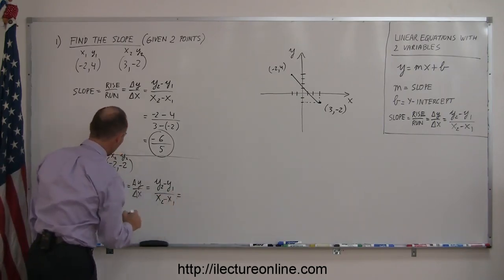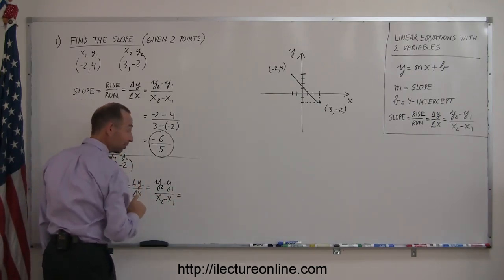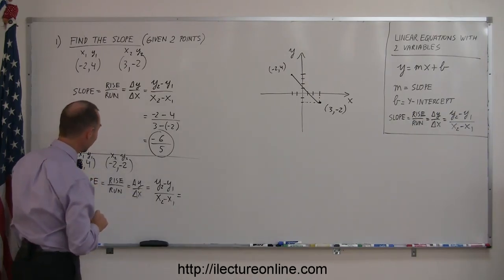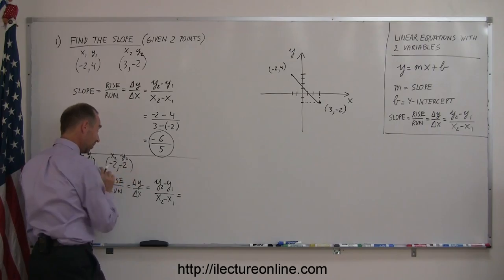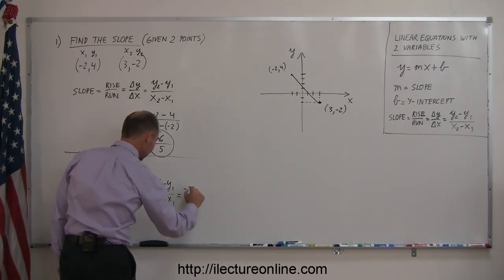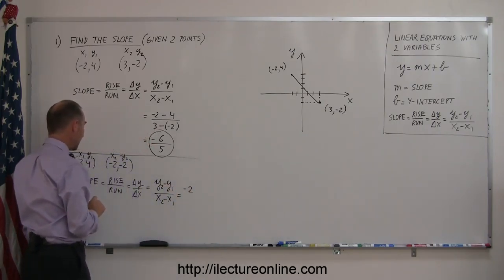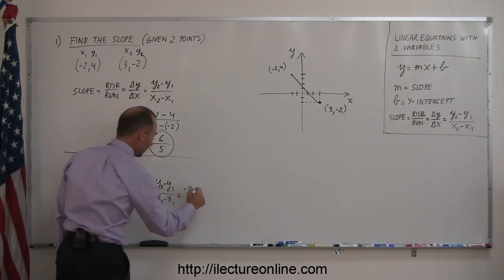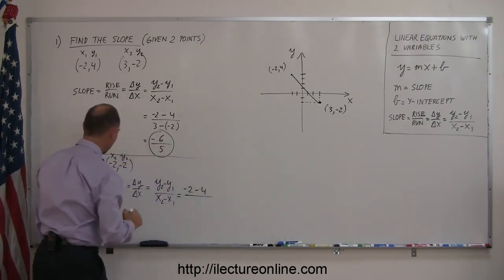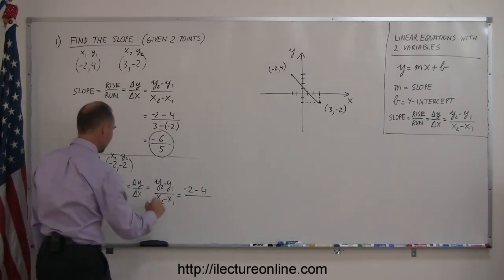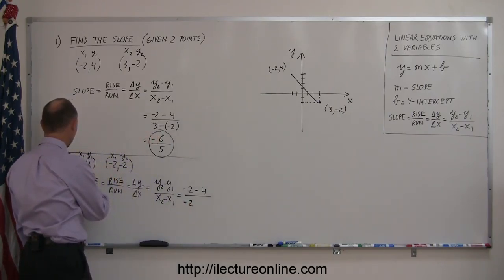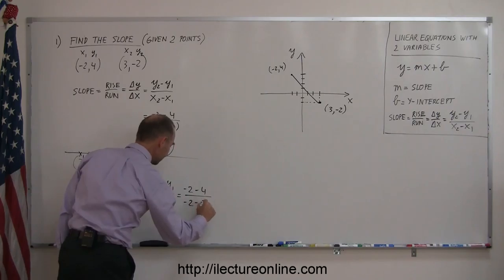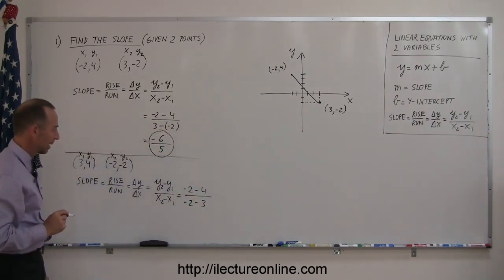So let's plug in the numbers. Y2 is negative, oh right here, negative 2. See, a good thing that I marked them. I almost picked the wrong number here, even though they're the same. This is the number negative 2, is y2, minus y1, so minus 4, divided by x2 which is a minus 2 minus 3.